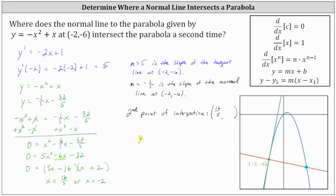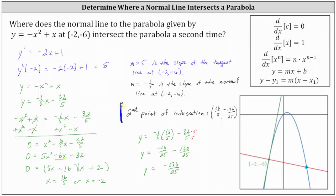Substituting sixteen fifths for x, we have y equals negative one fifth times sixteen fifths minus thirty-two fifths. Using a common denominator of twenty-five, we get negative sixteen twenty-fifths minus one hundred sixty twenty-fifths, giving us y equals negative one hundred seventy-six twenty-fifths. So the point where the normal line intersects the parabola a second time, which is the point in the fourth quadrant, is sixteen fifths comma negative one hundred seventy-six twenty-fifths. I hope you found this helpful.